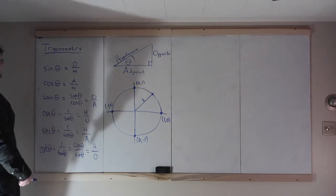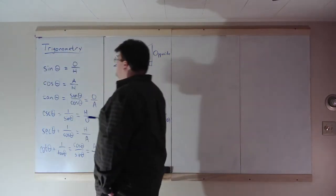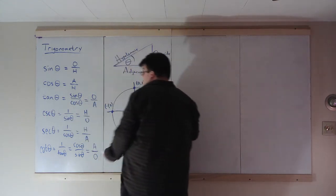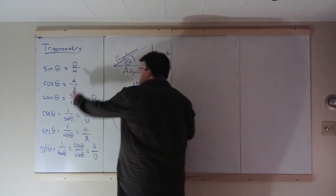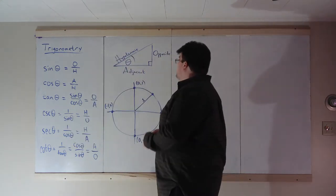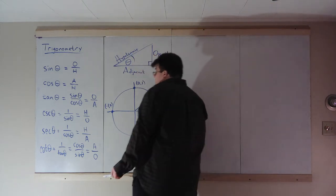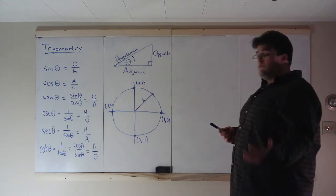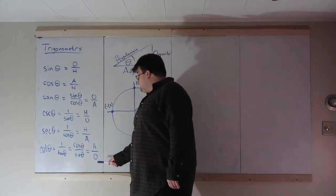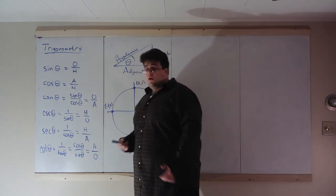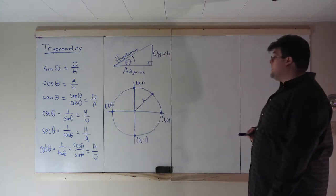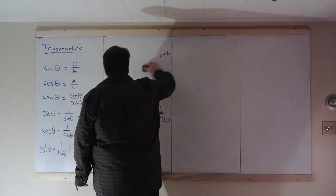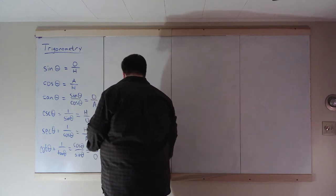We also have the reciprocals of these first three trig functions. The reciprocal of sine is cosecant of theta — hypotenuse over opposite. Cosine flipped around is secant of theta — hypotenuse over adjacent. And tangent flipped around is cotangent of theta — adjacent over opposite, or equivalently, cosine of theta over sine of theta. We'll use triangles many times throughout the semester when dealing with these trig functions.